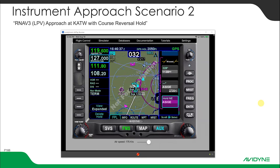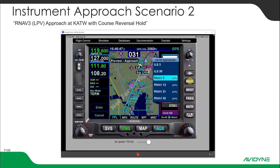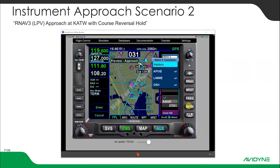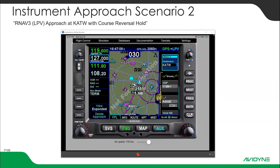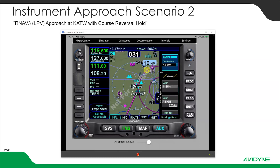We're sitting at Asigi. One of the things we want to do is load the RNAV-3 approach again, so let's hit the procedure button. We're going to select the RNAV-3 and push enter. We're going to do the initial approach fix as Apixi, select that, and push enter. It says you want to replace active approach — I can touch anywhere in the green box or hit enter to approve that. Now it knows it's got an LPV approach armed again.